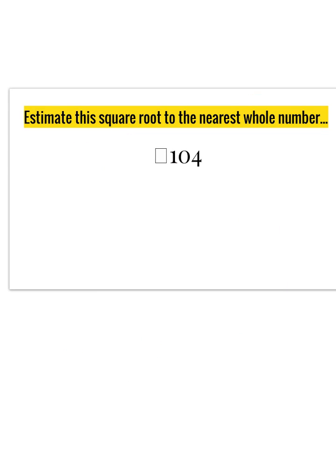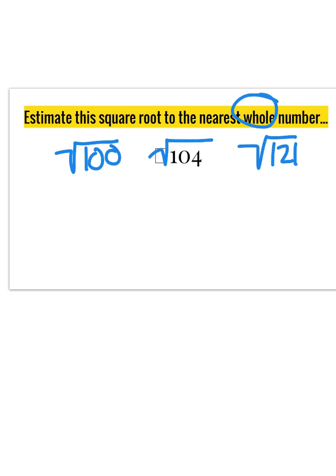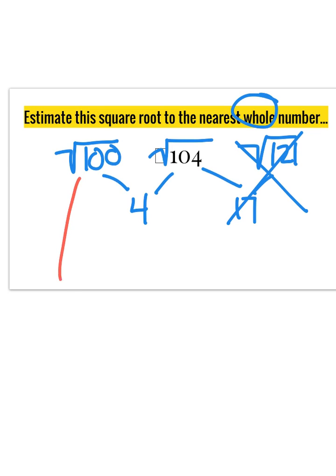Let's try the square root of 104. 104 is not a perfect square, but it is between two other perfect squares: 100 and 121. I want whichever one is closer because I want the nearest whole number estimate. 100 and 104 are only 4 spaces away, while 104 and 121 are 17 spaces away. So the square root of 104 is very close to the square root of 100, and my estimate is 10.